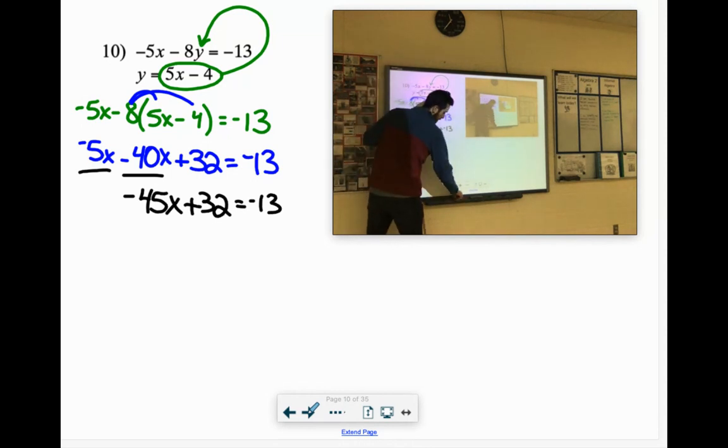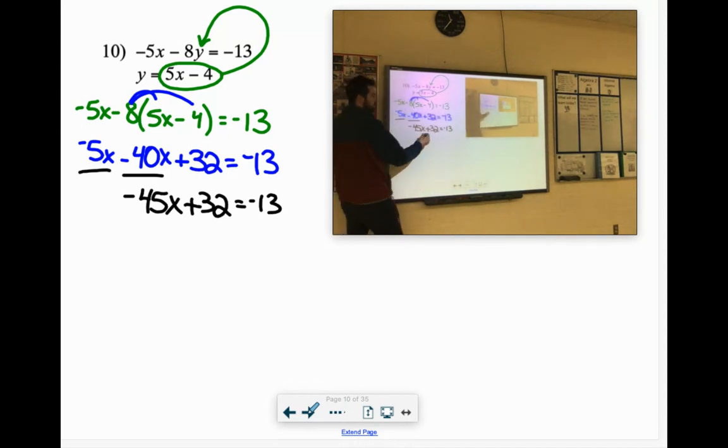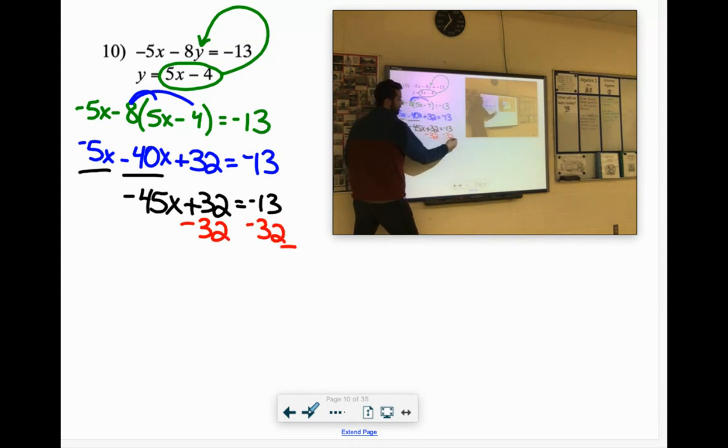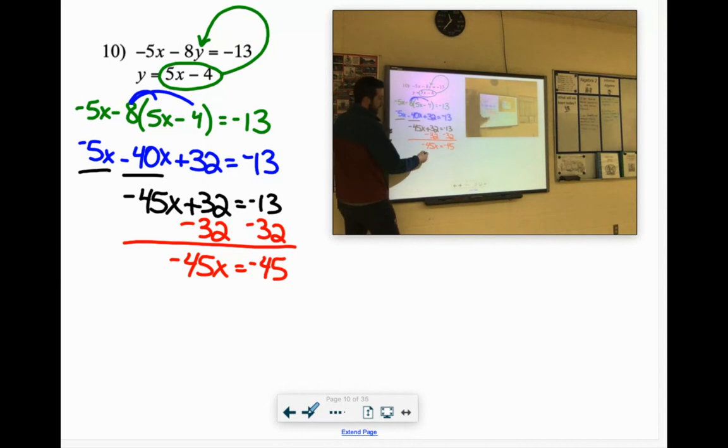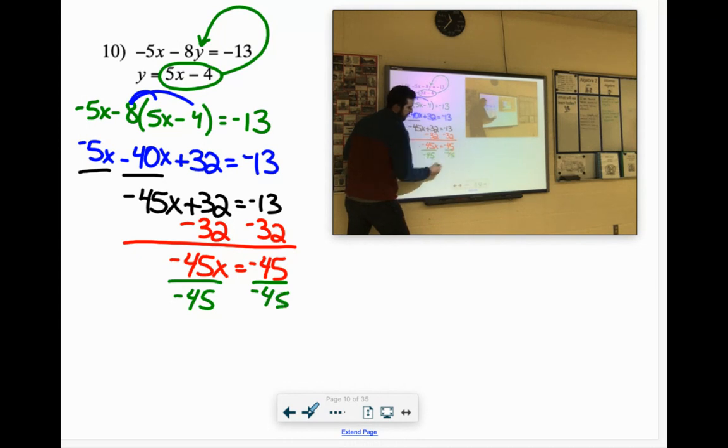Okay, I know that we need to subtract that 32 from both sides. Negative 45x equals negative 45. Okay, that's pretty adorable. If we divide by negative 45, negative 45 divided by negative 45 is just 1.